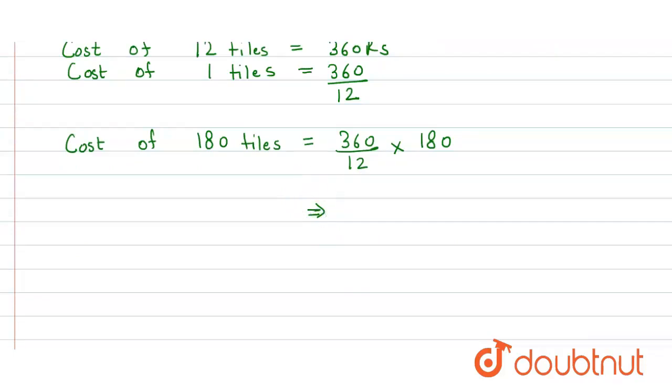So now we solve it. This 12 cancels this 360 and we get 30. So finally 30 × 180, and when we multiply we get 5400 rupees, and that's our answer.